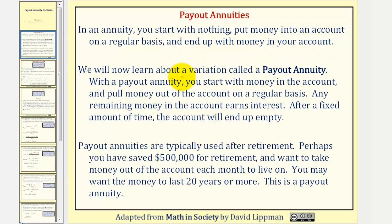We will now learn about a variation called a payout annuity. With a payout annuity, you start with money in the account and pull money out of the account on a regular basis. Any remaining money in the account earns interest. After a fixed amount of time, the account will end up empty.